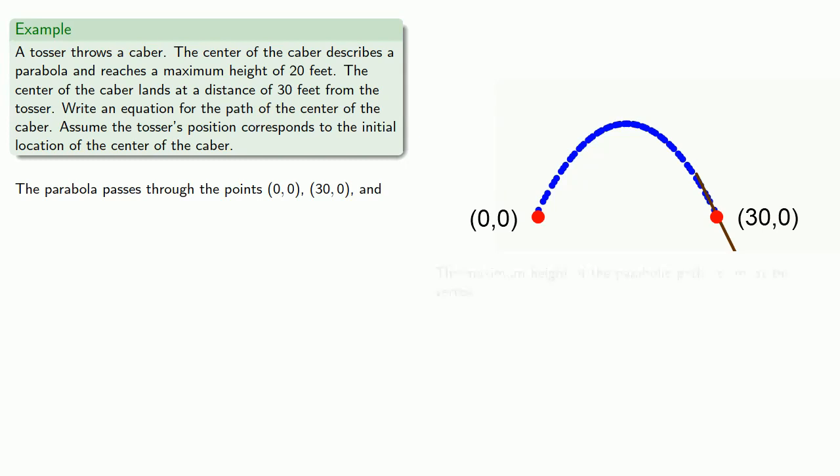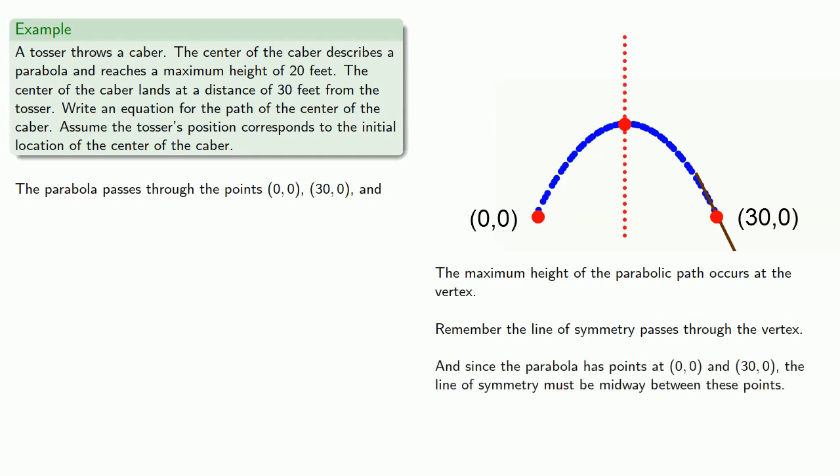The maximum height of the parabolic path occurs at the vertex. Now remember, the line of symmetry passes through the vertex, and since the parabola has points at (0, 0) and (30, 0), the line of symmetry must be midway between these points. And so the line of symmetry is x = 15.